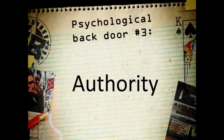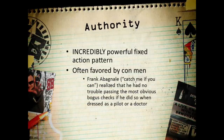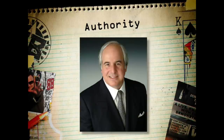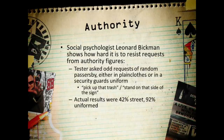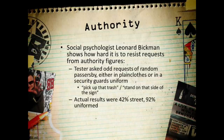The third backdoor is the most powerful: the authority fixed action pattern. This one is so potent it's used by con men to defraud people. Con man Frank Abagnale toured the world passing obviously bogus checks because he realized he could do it if dressed as a figure of authority — a police officer, security guard, pilot, or doctor. Leonard Bickman did a study where the same guy, once in plain clothes and once dressed as a security guard, walked up and down the street telling random people to do things — the result was 42% compliance in plain clothes versus 92% in uniform.